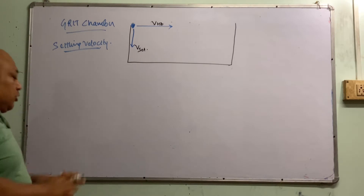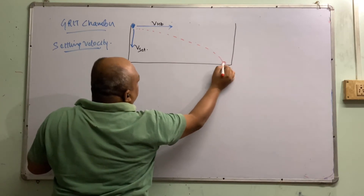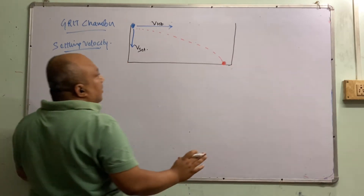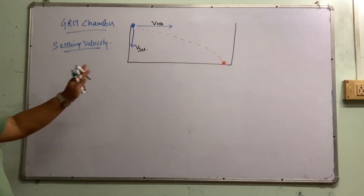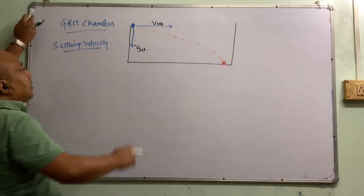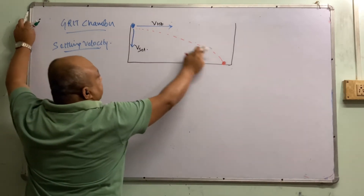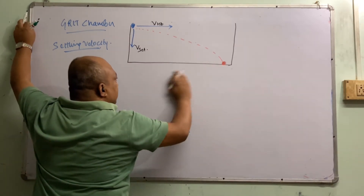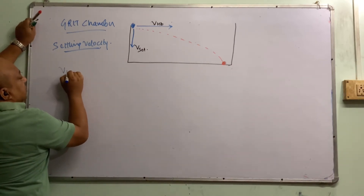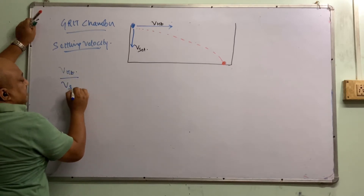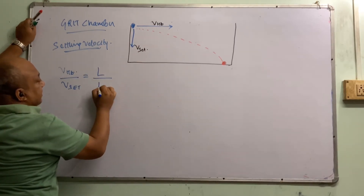Our objective is to make the particles settle over here — maximum over here. We don't want them to escape, and we don't want them to settle too near either. This is the ultimate design. For particles with horizontal velocity and settling velocity, to make the particle settle at the optimum length, the condition is: V_horizontal divided by V_settling equals length divided by depth.